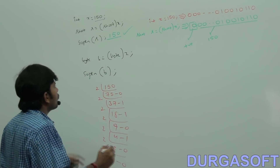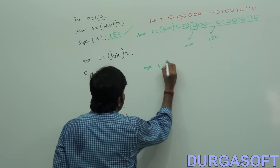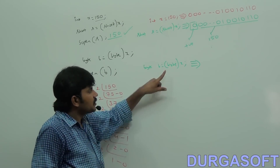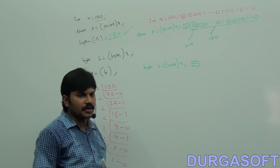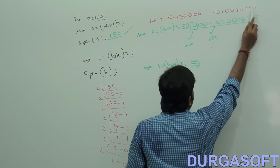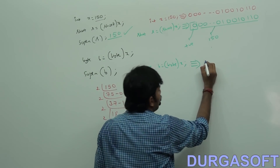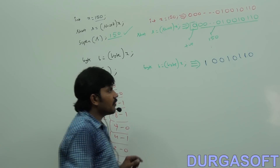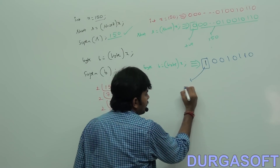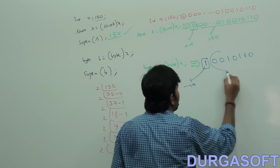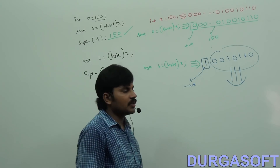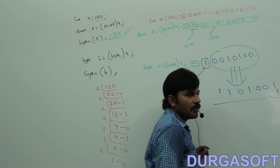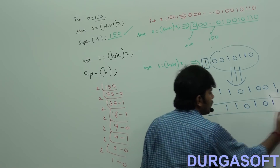But now, byte b is equal to (byte) x. Byte means 8 bits. So for the last 8 bits: 1, 0, 0, 1, 0, 1, 1, 0. In that, what is the most significant bit? 1. One means negative. If it is negative, the remaining bits represent the value in 2's complement form. The 2's complement gives: flip bits and add 1, resulting in 1, 1, 0, 1, 0, 1, 0.